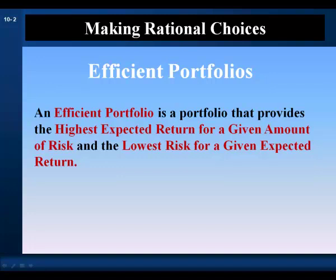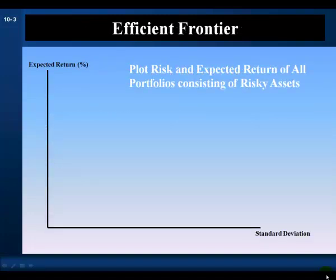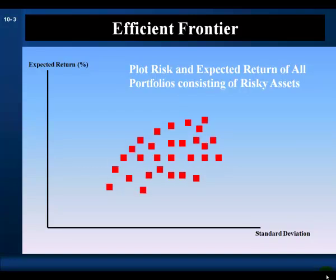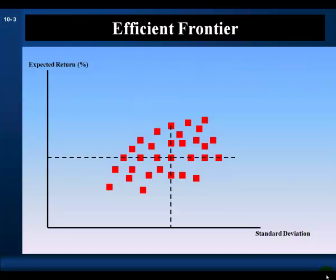Let's identify the best portfolios in the investing universe. In risk and return space, we plot the risk and returns of portfolios containing all possible combinations of risky assets in the universe. We obtain a cloud in space called the Investment Opportunity Set. Some portfolios are better than others. At this level of risk, this is the best portfolio — the efficient portfolio at this level of risk.